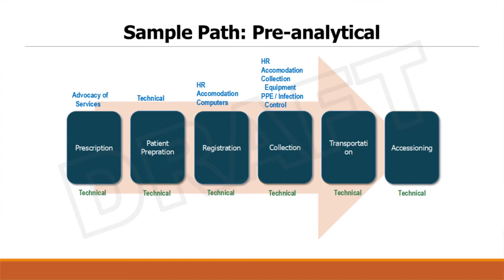Coming to collection, what are the things that management needs to do? Again human resources, accommodation and environment, personal protective equipment, infection control mechanisms, collection equipment — there are a lot of things that the management has to do where collection is concerned. For transportation, again availability of courier mechanisms, transport mechanisms, safe transport mechanisms, and infection control mechanisms — all those things should be provided by the management.